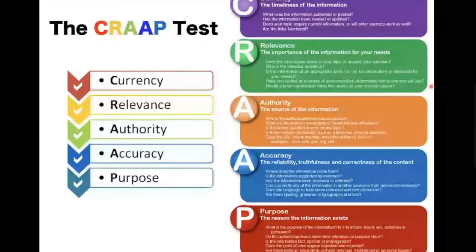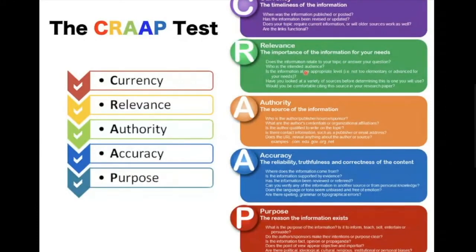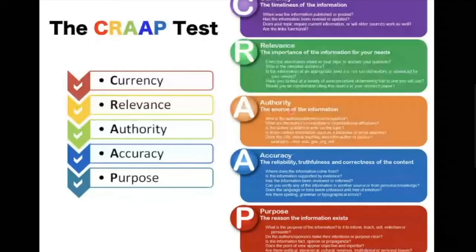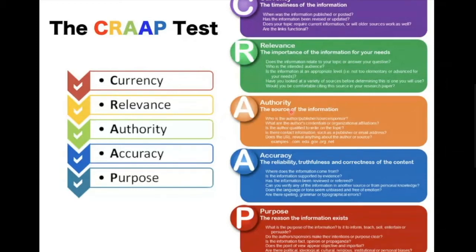You can also assess relevance — the importance of the information for your needs. Does the information relate to your topic? Does it answer your question? Who is the intended audience? You also need to assess authority — who is the author, publisher, source, or sponsor? Look at the credentials or organizational affiliation. If you want more reliable data, you would go to a researcher from a reputable university like Oxford, for example. Accuracy means assessing the reliability, truthfulness, and correctness of content. Where does the information come from? Is it supported by evidence? How many experimental works did they do before coming up with a conclusion?